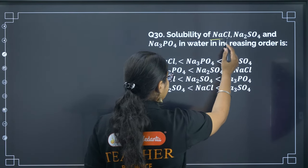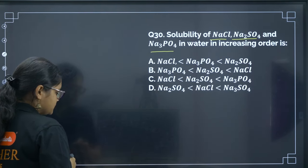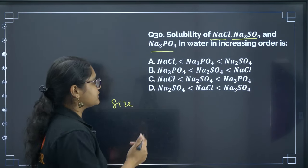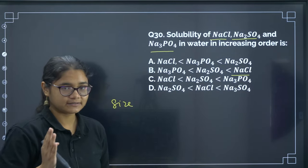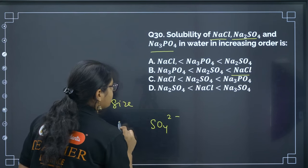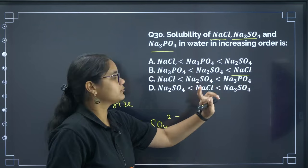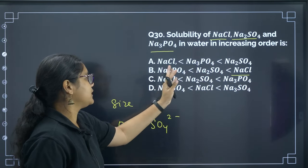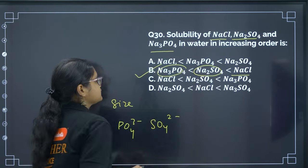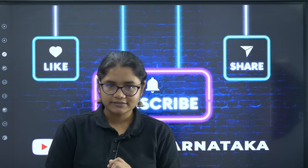Next: solubility of NaCl, Na2SO4, and Na3PO4 in water in increasing order. Solubility depends on the size of the ions — smaller size means more solubility. The cation (Na⁺) is the same for all; the anion differs: Cl⁻ is smallest, SO4²⁻ is larger, and PO4³⁻ is even larger and has higher charge, reducing solubility further. So increasing order of solubility is Na3PO4 < Na2SO4 < NaCl. The correct answer is option B.